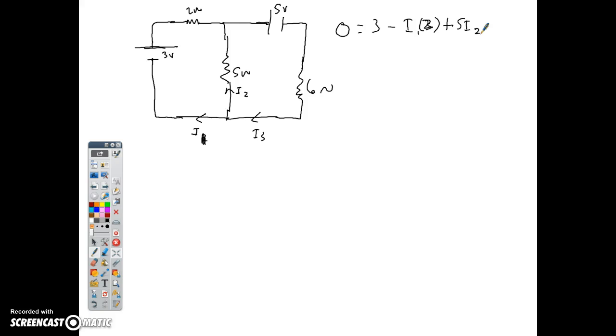And then I'm going backwards to this one, right? This is gonna be plus five I2 equals. Okay, now give me another loop. Let's start at that same point but go the other way, go the big loop. So I'm gonna go zero equals three minus I1 times two. That's still legit. Minus five because I'm going backwards against the battery, and then I'm going in the correct direction for this, so minus I3 times six.